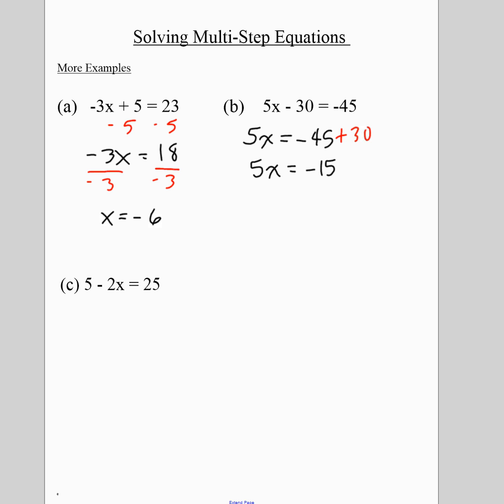Then you ask yourself, what do I need to do to get rid of multiplying by 5? You divide both sides by 5. And your final answer will be x equals negative 3.